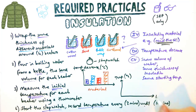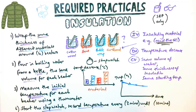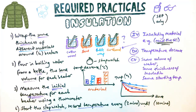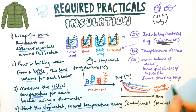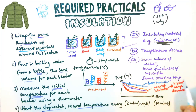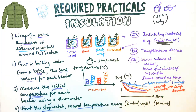Another graph they could give you — slightly trickier — is a line graph where each material is a separate line. One line might show a very low temperature decrease over time, while others show higher decreases. The red line here would be the worst insulator as it has the highest temperature decrease over the measurement period, dropping all the way to room temperature. The blue line is the best insulator because it decreases by the lowest amount.